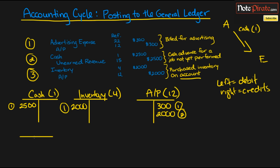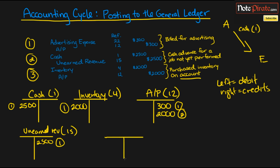The last two are unearned revenue — reference number fifteen — with a credit entry for $2,500, and we post a little one there. The final one is advertising expense, which is a debit entry for $300, with a little one next to it. We've now posted all of our transactions.